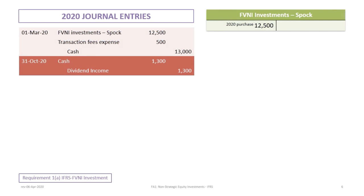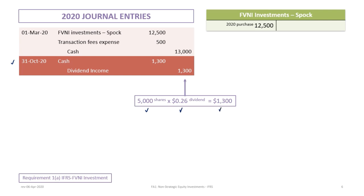The next transaction date is October 31, 2020, where Spock pays a dividend and McCoy will enter a journal entry to record the dividend. Debit cash for $1,300 — that's calculated as 5,000 shares times $0.26 per share dividend — and credit dividend income for $1,300.